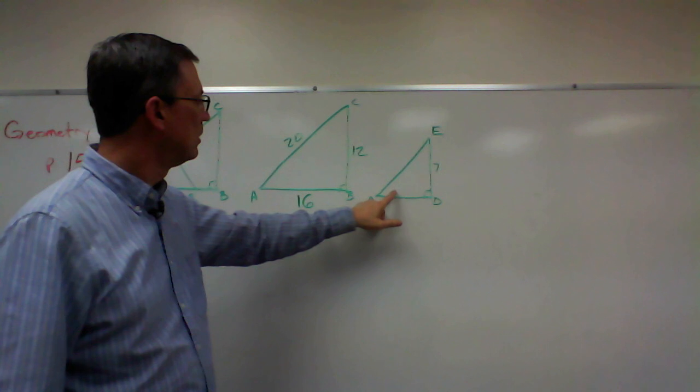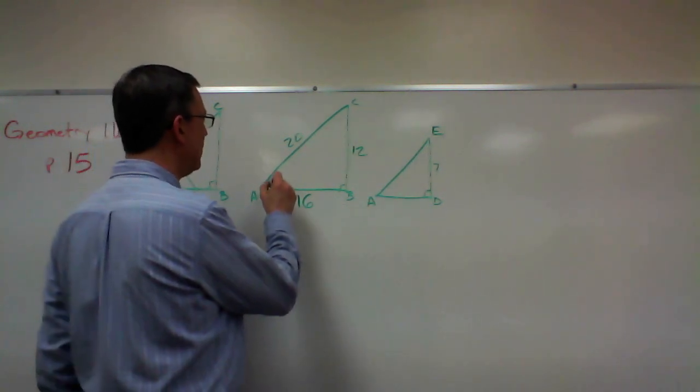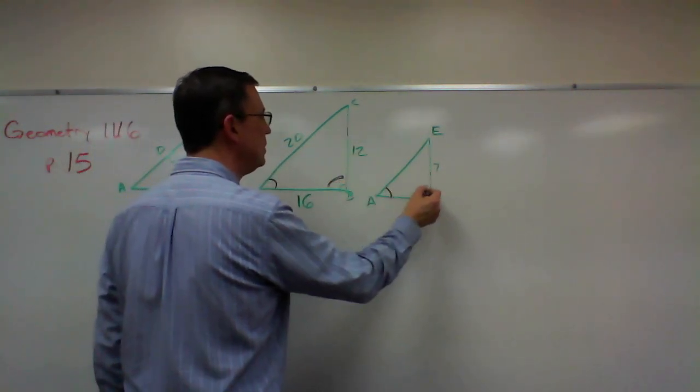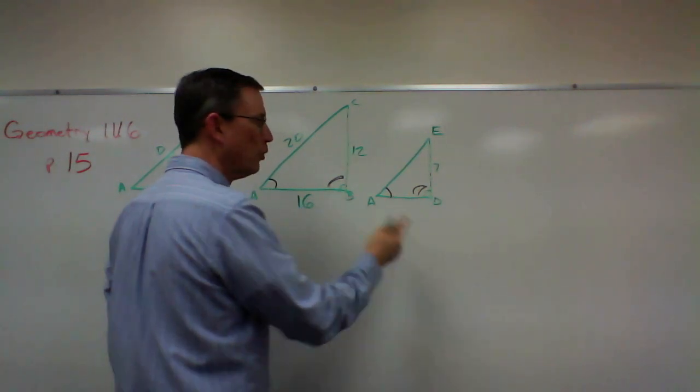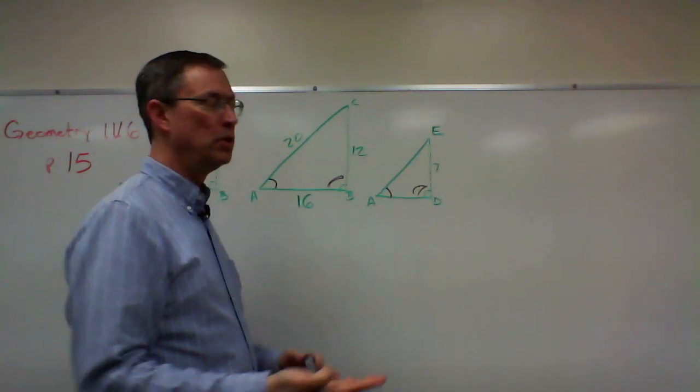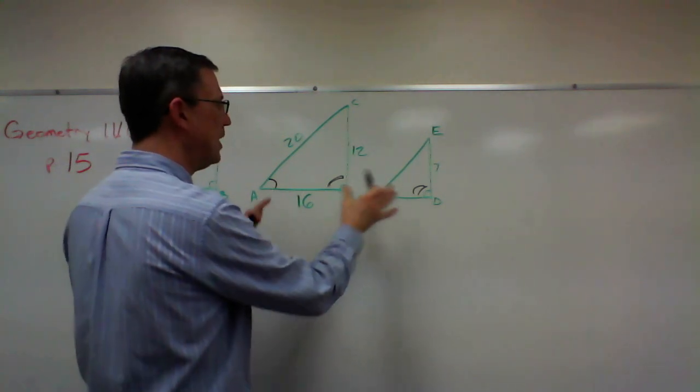Angle A corresponds to angle A, so I know these two are equal. These two are equal because they're both right angles. That's marked, so we know they're congruent to each other. Once I have them laid side by side, now I can find the similar parts.